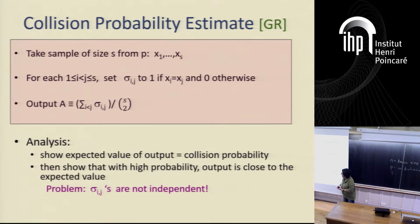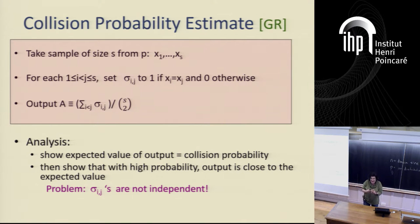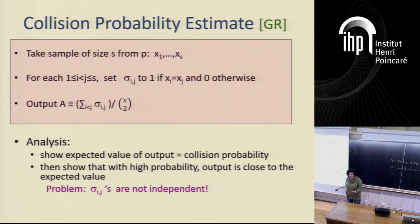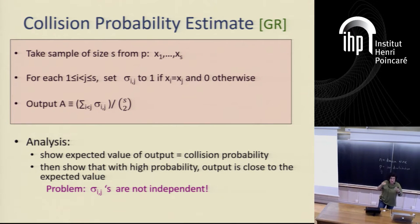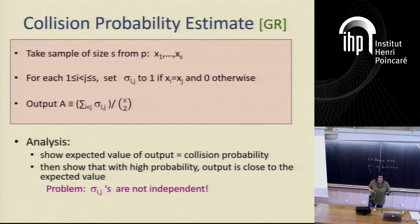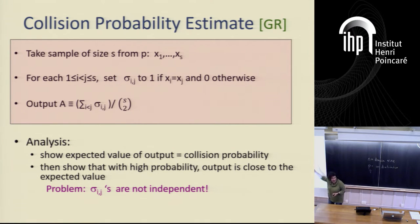The only problem is talking about the variance, because these indicators are not independent when you do it this way. From S samples you're getting S squared samples of collision probabilities, so obviously not independent. What they showed is they bounded the variance in a very nice way — they showed that actually there's enough independence in there that the variance is nice.